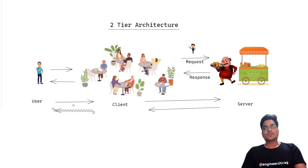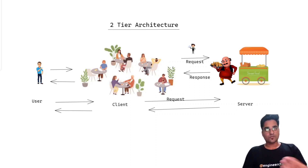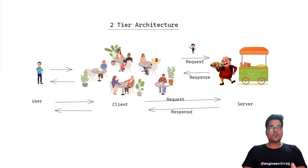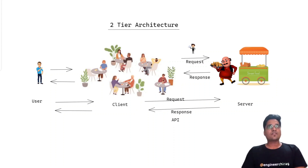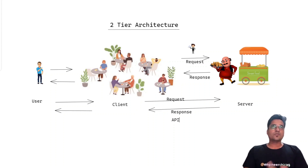A few more technical terms: here we are making a request, and what we are getting back is a response from the server. This process — your request and response — in the restaurant case was handled by a waiter. In technical terms, we call this an API, which is basically responsible for making a connection and doing communication between your client and server.